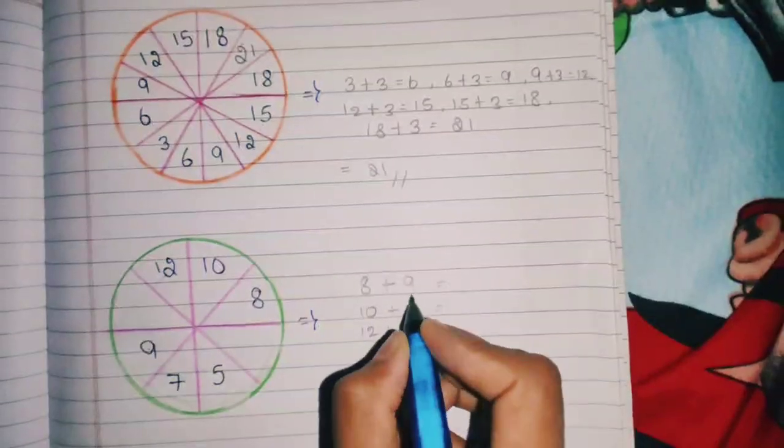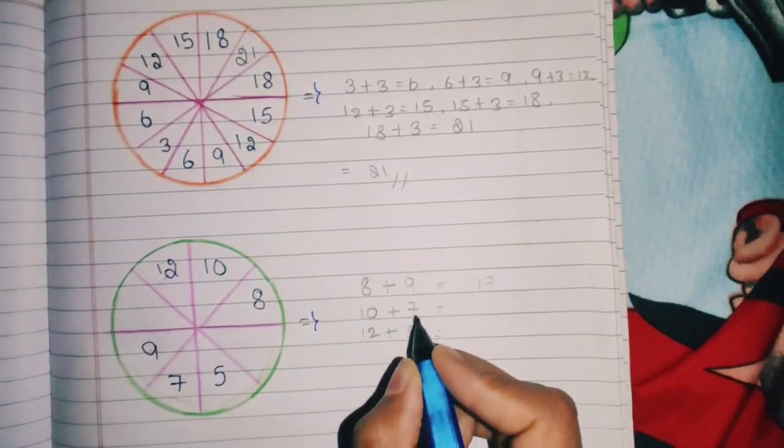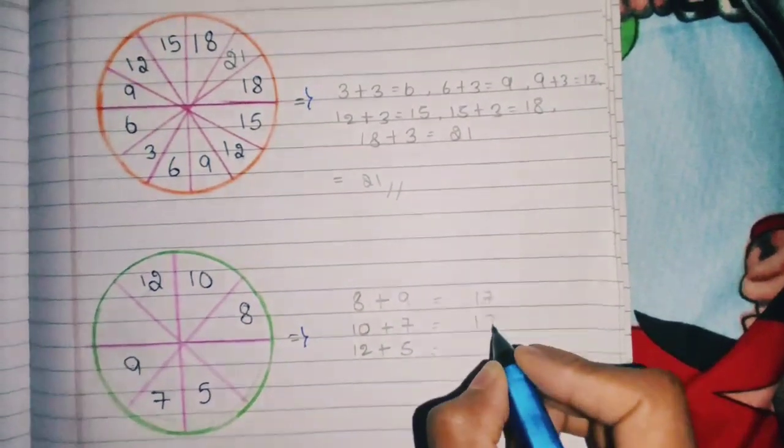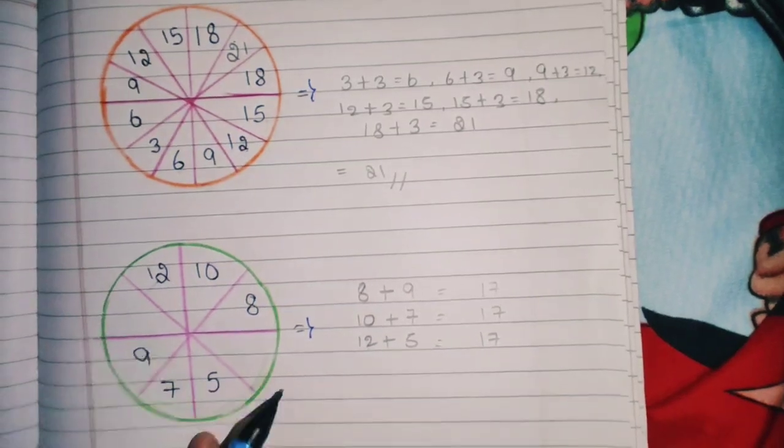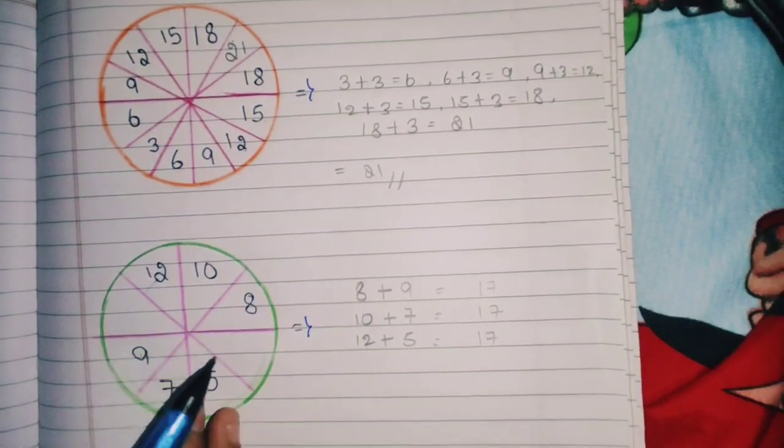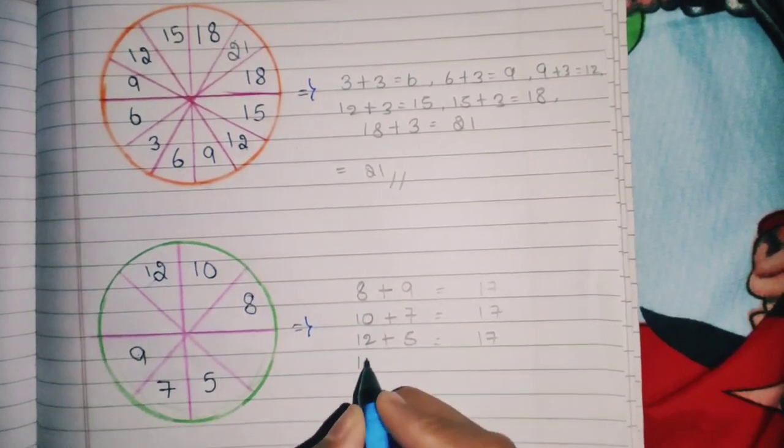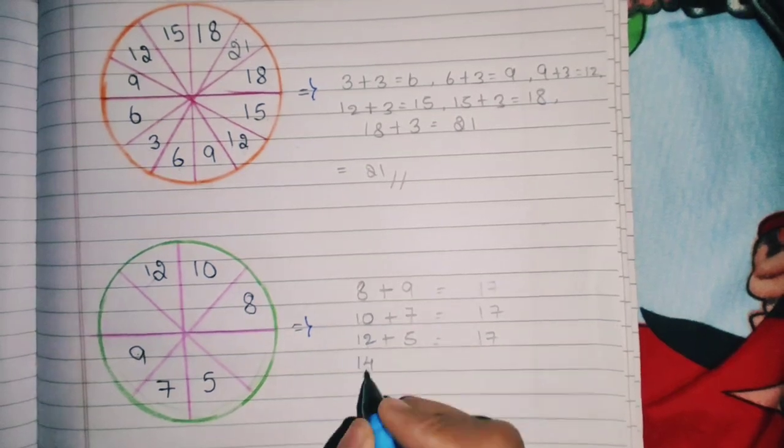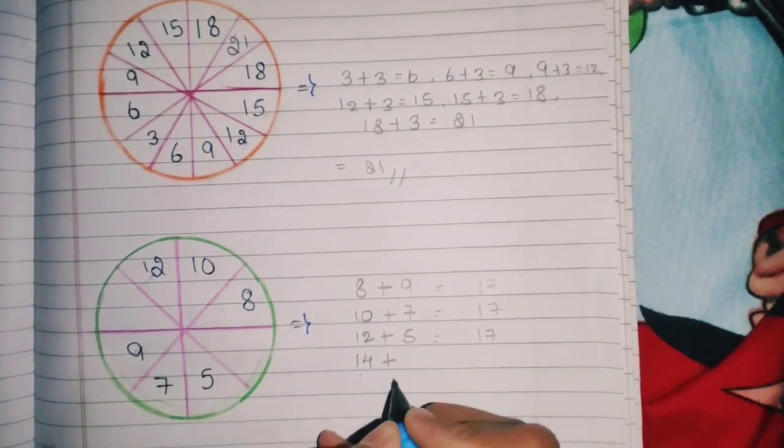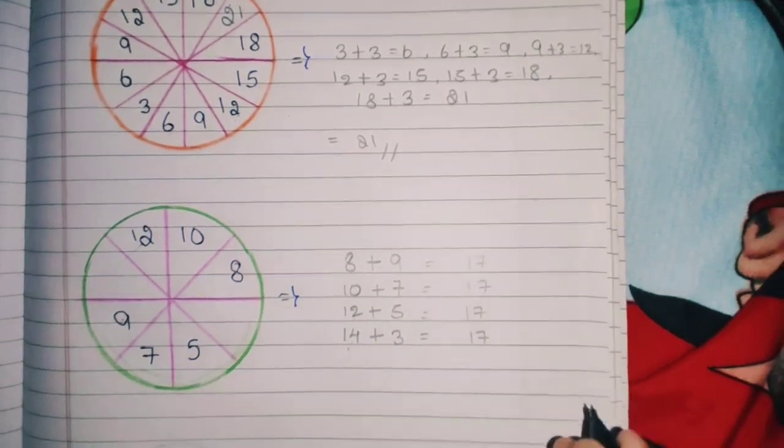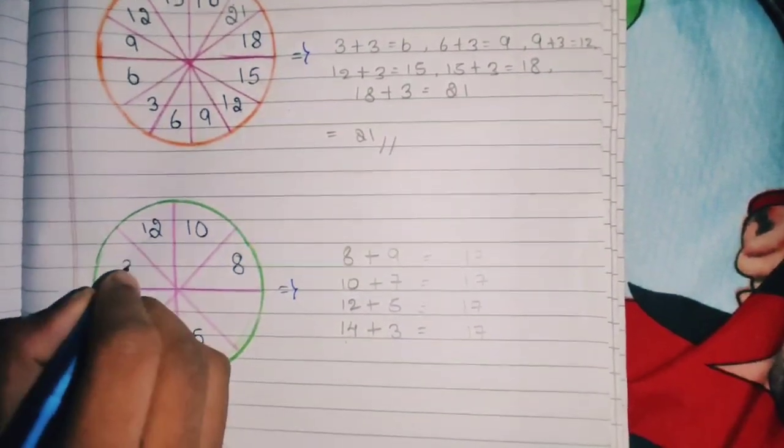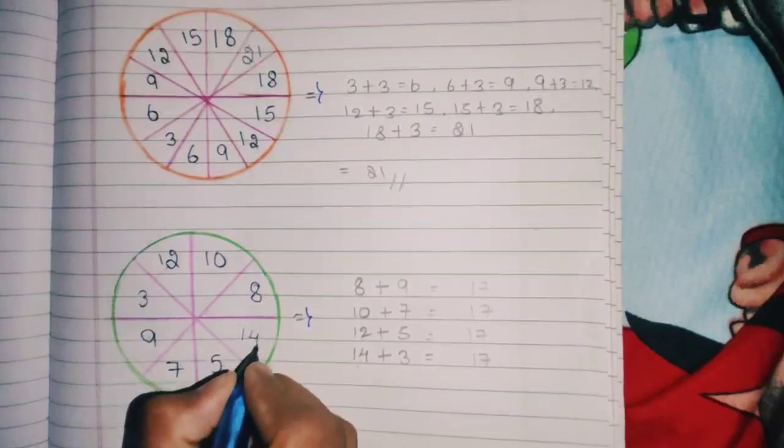8 plus 9 equals 17. 10 plus 7 equals 17. 12 plus 5 equals 17. To find next missing numbers, we have to add 14, the next even number. For 17, we have to add 3 to get 17. So the missing numbers are 3 and 14.